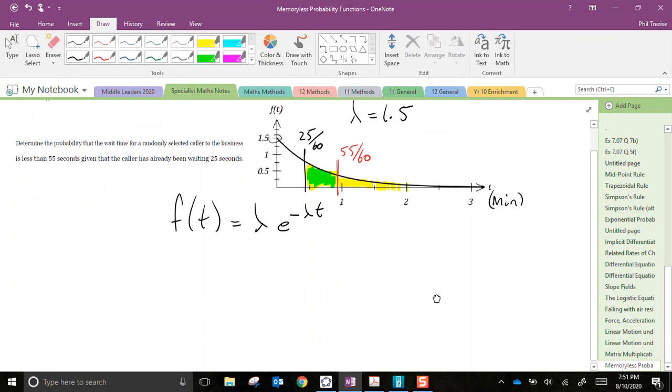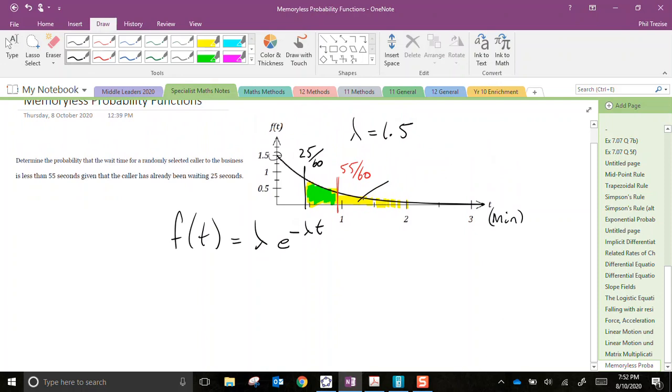So this is an example of conditional probability. I might label this yellow region as event A, and event A would be the time to be answered is anything greater than 25 seconds. I'll highlight that yellow so we remember that event is the yellow area. And I might label this one as event B, the time to be answered is less than 55 seconds.